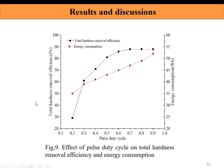The effect of the pulse duty cycle on the efficiency of total hardness removal and energy consumption was also evaluated. Increasing the pulse duty cycle from 0.2 to 0.7 leads to increasing energy consumption. The efficiency of total hardness removal reaches 88% at a pulse duty cycle of 0.7.